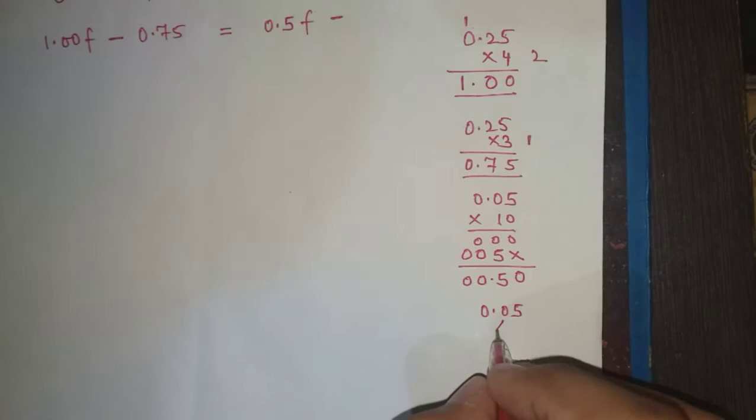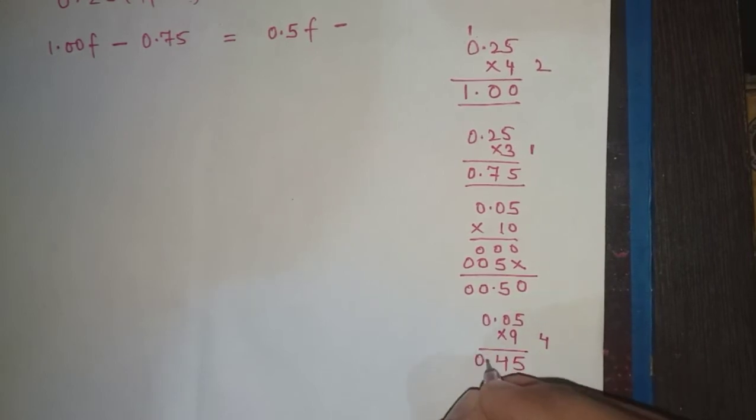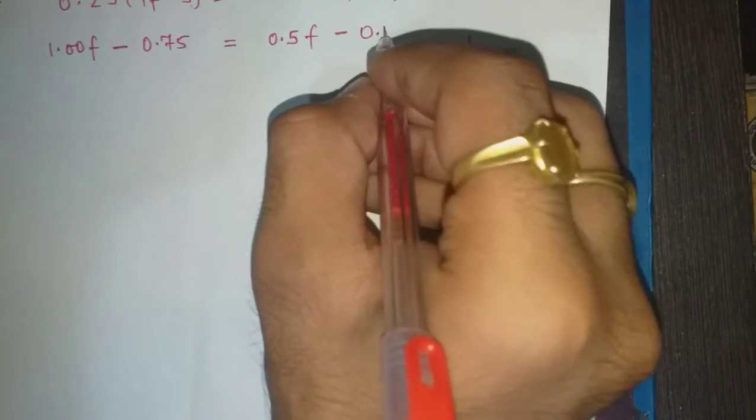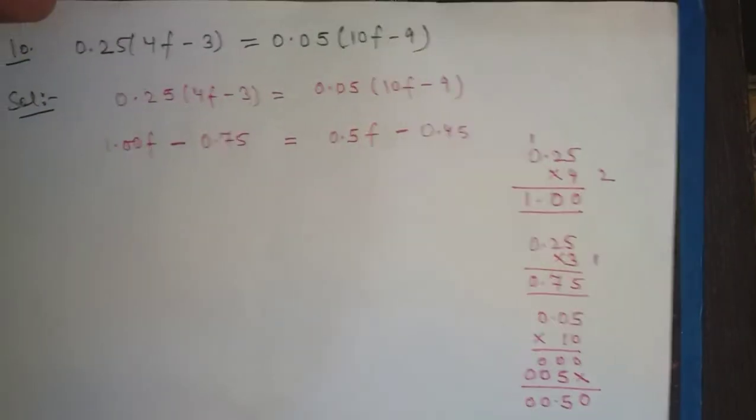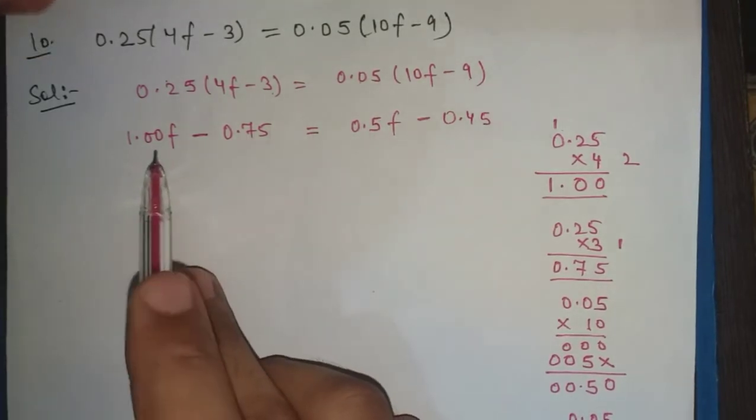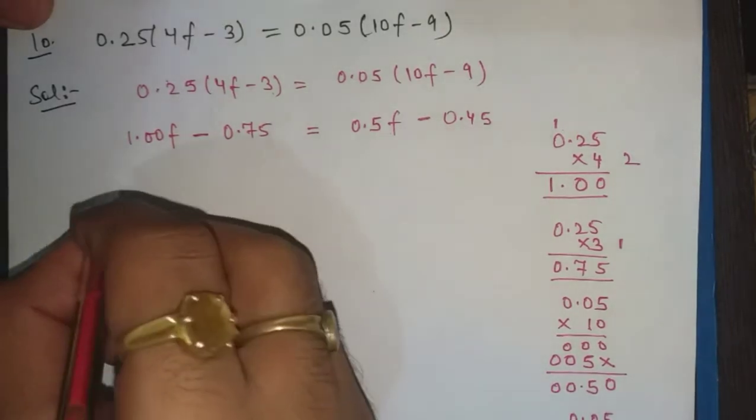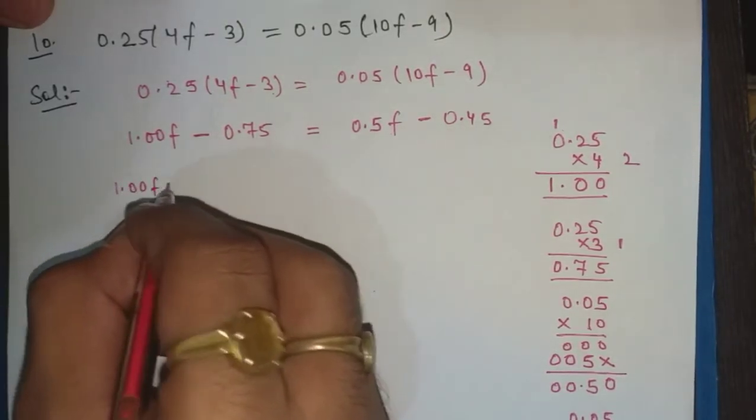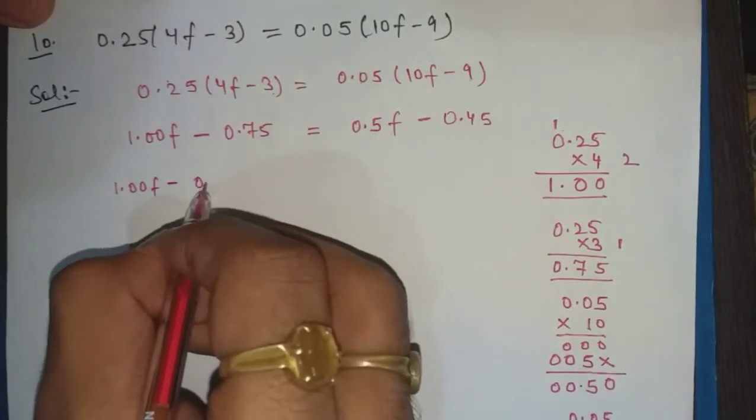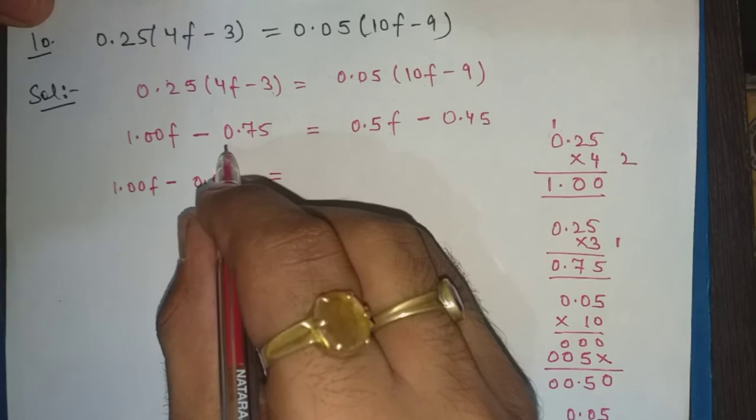Now we will take the terms with variables on one side and the non-variable terms on the other side. 1.00f minus 0.5f equals 0.75 minus 0.45.